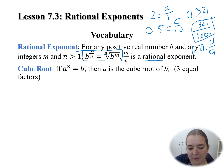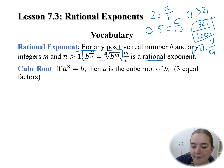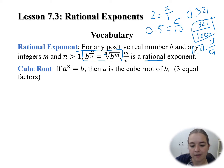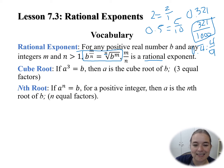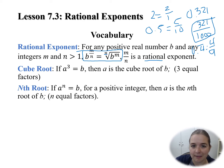That idea of nth root: if a cubed is b, then a is the cubed root of b — that tells me a is three equal factors that make b, so a times a times a gives me b. I can apply this to the nth root: if a to the power of n is b for a positive integer, then a is the nth root of b. I have n equal factors, so a times itself n times gives me b.